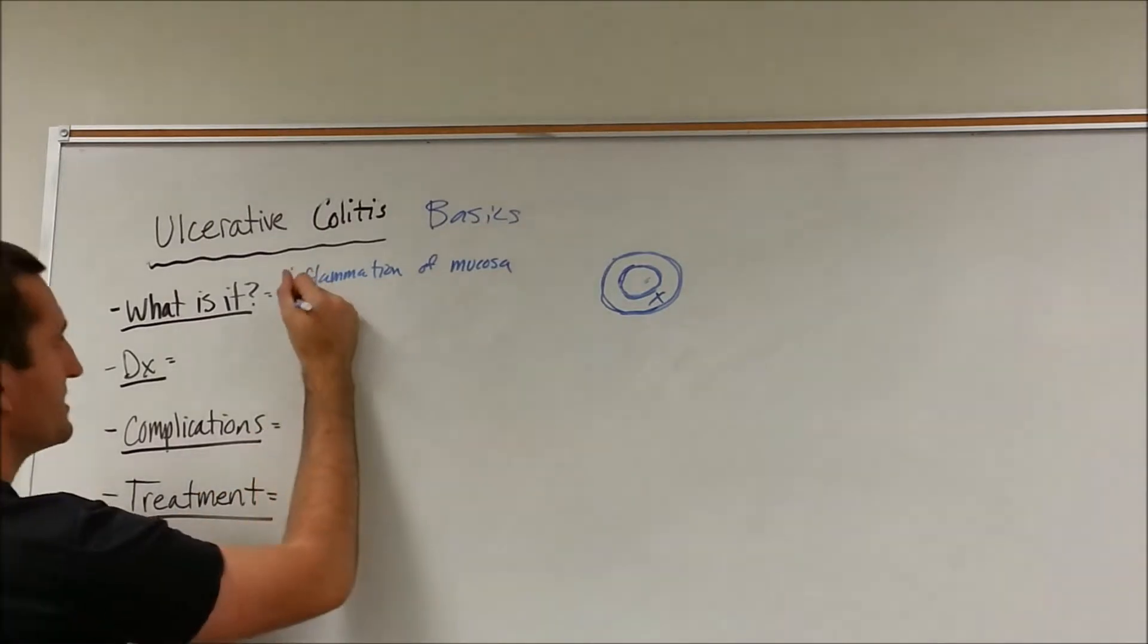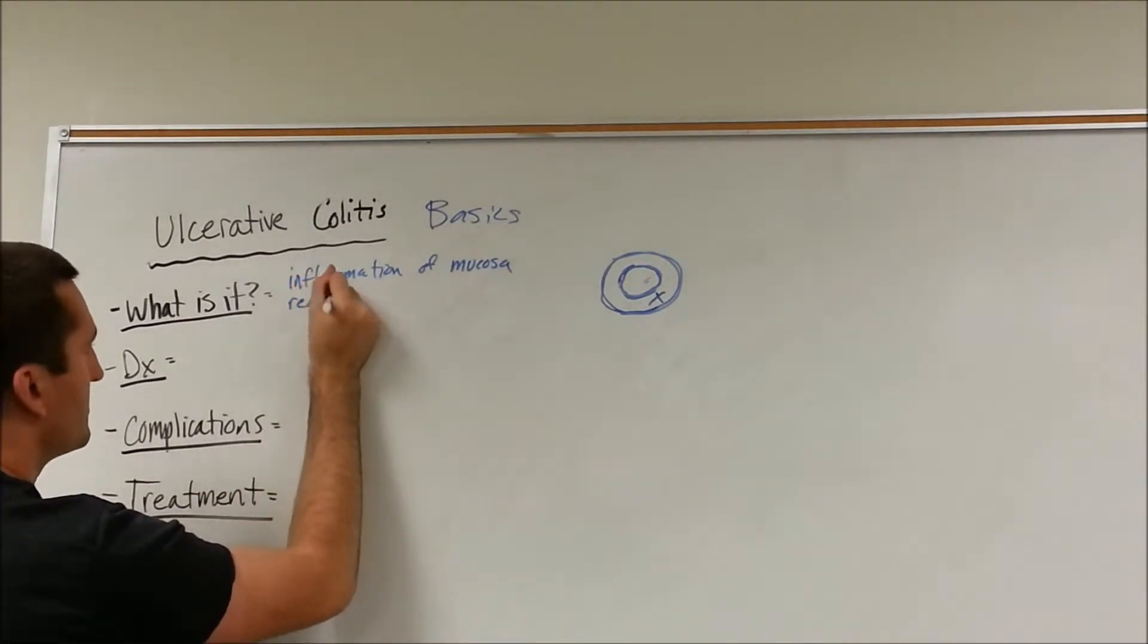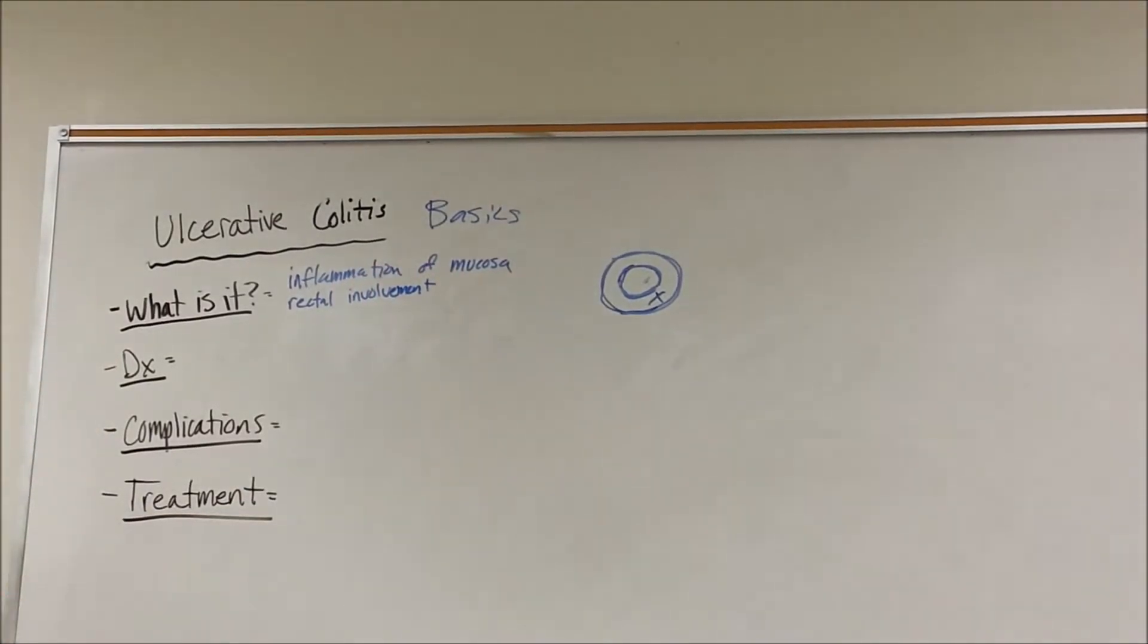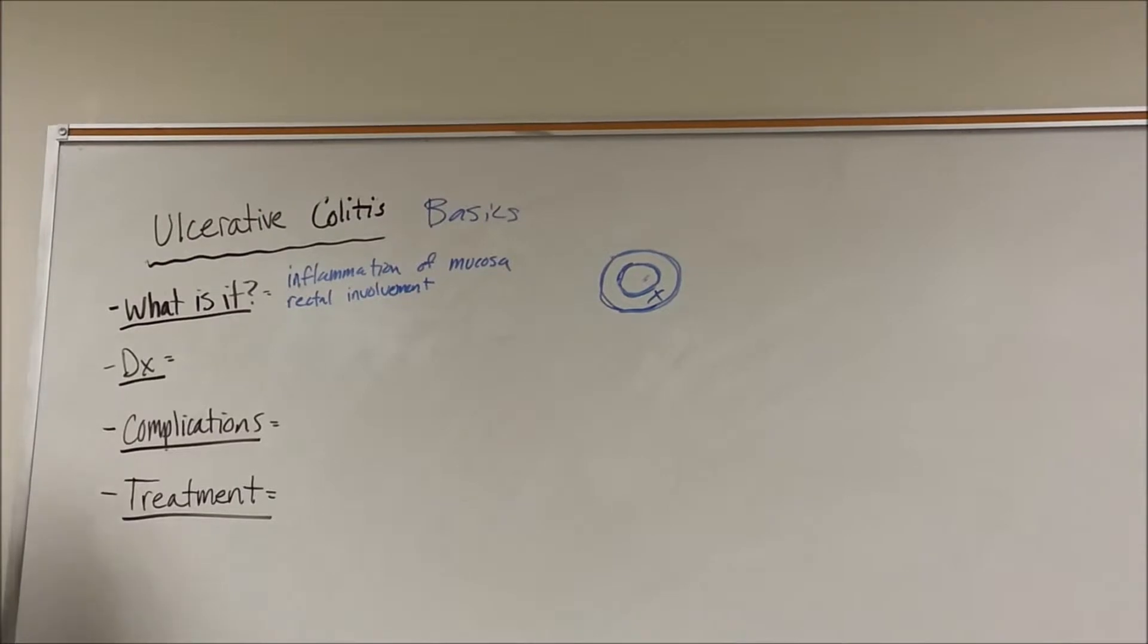Now, typically, you're going to see rectal involvement. That is the number one sign for ulcerative colitis is rectal involvement. Crohn's disease doesn't typically involve the rectum, but ulcerative colitis does.